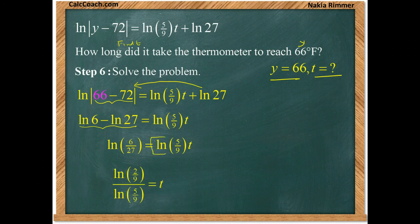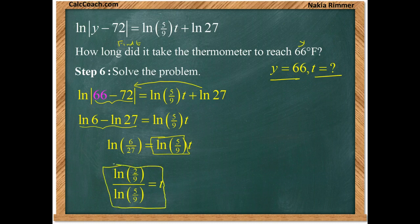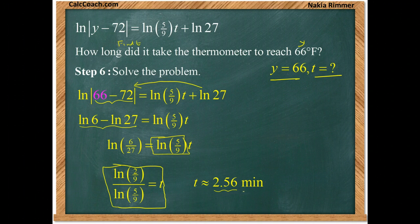We'll divide. This is just a constant here, log of 5/9 is a constant, so we'll divide by it. And that is the actual value of time T. And we can go to a calculator to get the approximation. It turns out that it's about 2.56 minutes until the thermometer rises to a temperature of 66 degrees. Okay, great.